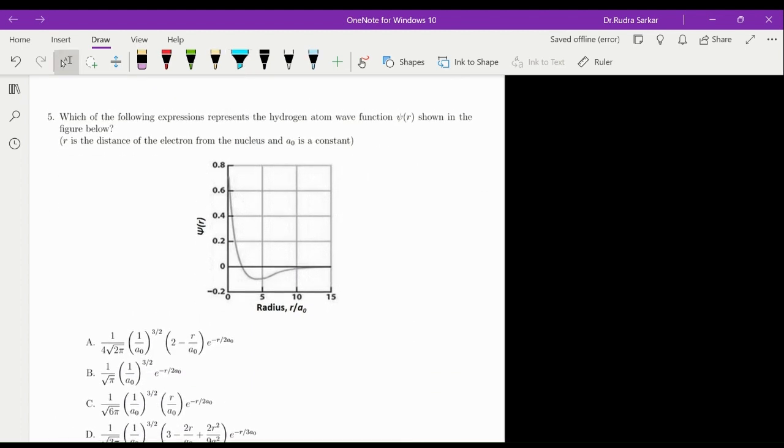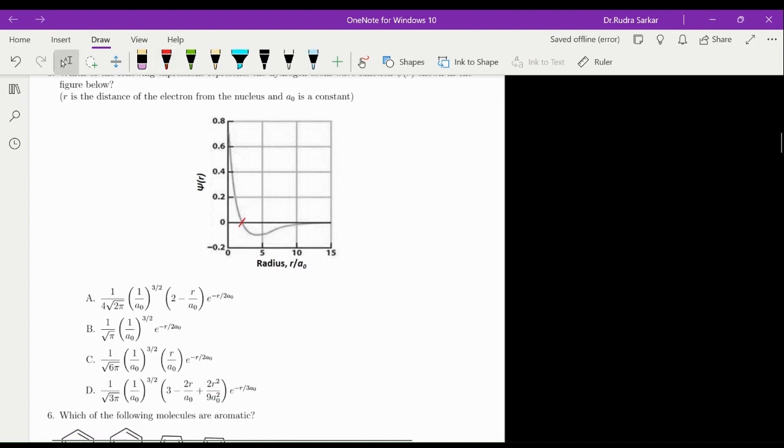Which of the following expressions represent the hydrogen atom wave function shown in the figure below? R is the distance of the electron from the nucleus and A0 is a constant. As we can see over here that it has a node. So the wave function that is going to have one node is the option A. And how do we know that? For this node, we will have 2 minus R over A0 equals 0. And what we find is R by A0 is equal to 2. So over here our answer is going to be option A.